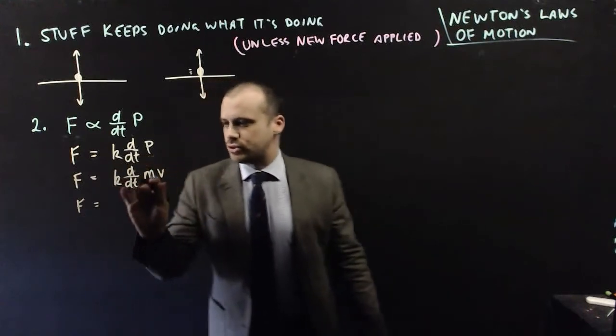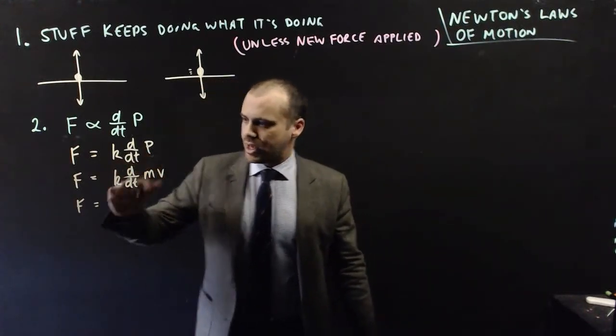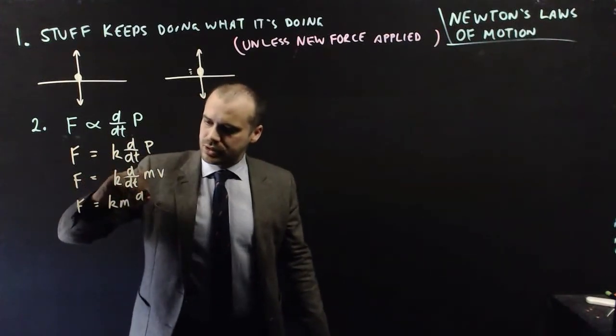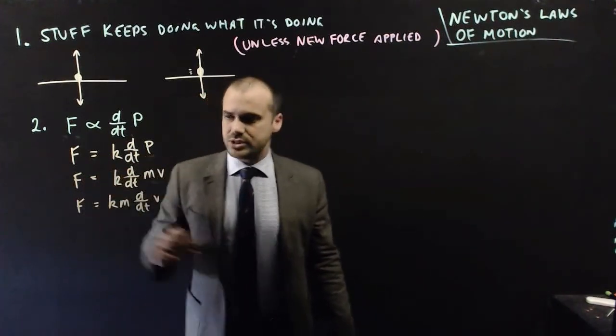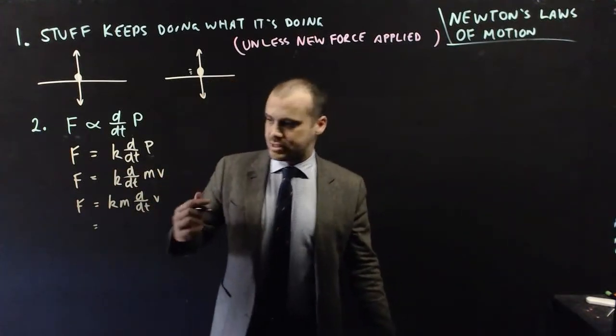So we get km, the derivative of velocity, and we know that the derivative of velocity is acceleration. So we get F equals kma.